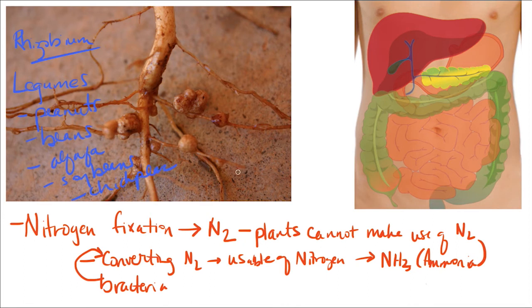This Rhizobium bacteria forms this really nice symbiotic relationship. Symbiotic meaning they're both giving something to the other and they're both benefiting. They form this nice symbiotic relationship with the legumes, and the Rhizobium are nitrogen fixing bacteria. So they turn atmospheric nitrogen into ammonia so that the plant can use it, and the plant then in turn performs photosynthesis and provides nutrients and other things to the bacteria.